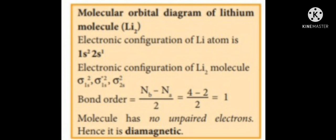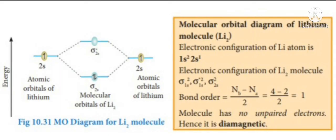Next, we find the bond order for lithium molecule using the formula Nb minus Na divided by 2. Here Nb equals 4, Na equals 2. Substituting: 4 minus 2 divided by 2 equals 1. Hence bond order value for lithium molecule is 1, showing a single bond is formed between two lithium atoms. This lithium molecule has no unpaired electrons, hence it is diamagnetic. We have completed the formation of lithium molecule using the molecular orbital diagram.